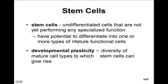Stem cells are undifferentiated cells that are not yet performing any specialized function. They have the potential to differentiate into one or more types of different mature functional cells. For example, in our bone marrow we have pluripotent stem cells that will become our various types of blood cells. The developmental plasticity of a cell refers to the variety of different mature cell types which a particular stem cell can give rise to.